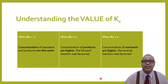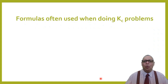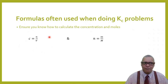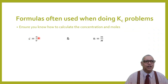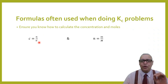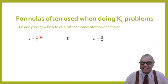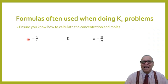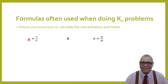The formulae used for Kc problems go back to grade 10. The first formula is c = n/V, where concentration equals number of moles divided by volume. The SI unit for moles is mol and volume must be in cubic decimeters. If given a volume in cubic centimeters, convert to cubic decimeters, since concentration has SI units of mol·dm⁻³.